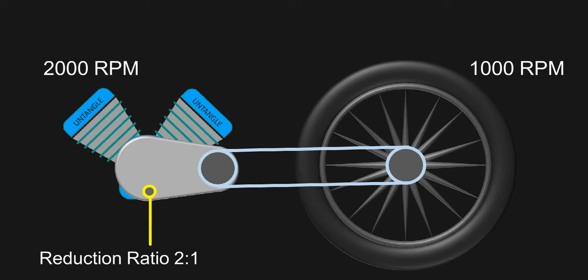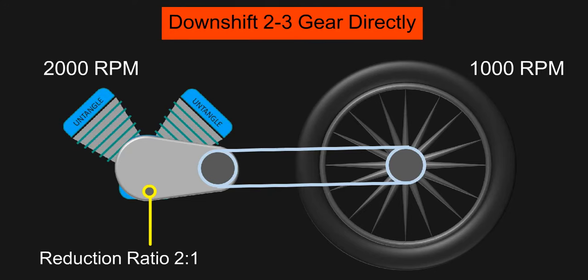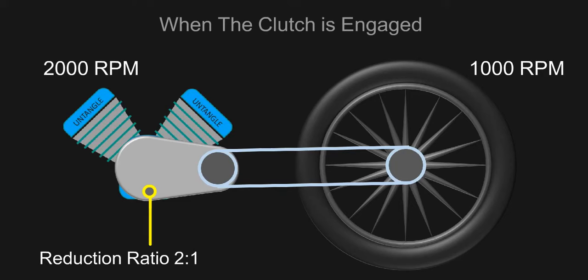Now due to any situation, if you downshift 2 or 3 gears directly, then when the clutch is engaged with the engine running at same speed, this will happen.